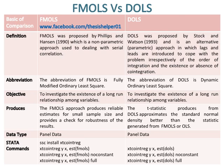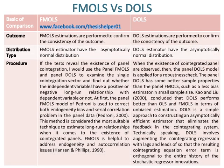Whereas the T-statistic produced from DOLS approximates the standard normal density better than the statistic generated from FMLS or OLS. Data type in both FMLS and DOLS approaches are panel data. Static commands for both approaches are given for testing purposes, and estimators in both are all asymptotically normally distributed.